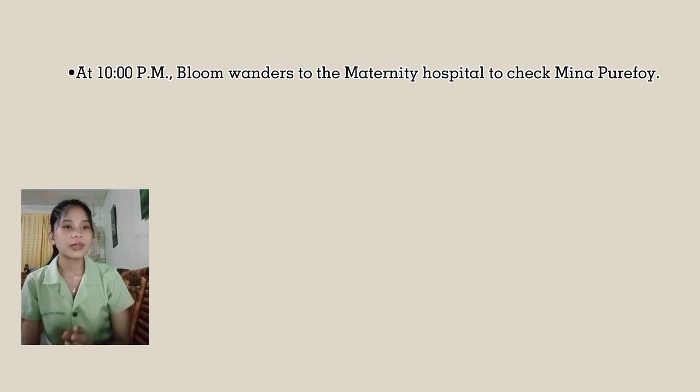Bloom relaxes on Sandymount Strand around sunset after his visit to Mrs. Dignam's house nearby. A young woman, Gerty McDowell, notices Bloom watching her from across the beach. Gerty reveals more and more of her legs while Bloom masturbates. Gerty leaves and Bloom dozes. At 10 p.m., Bloom wanders to the maternity hospital to check on Mina Purefoy. Also at the hospital are Stephen and several medical student friends drinking and talking boisterously about subjects related to birth. Bloom agrees to join them, though he privately disapproves of their revelry in light of Mrs. Purefoy's struggle upstairs. Buck arrives and the men proceed to Burke's pub. At closing time, Stephen convinces his friend Lynch to go to the brothel section of town to find a prostitute, and Bloom follows, feeling protective.